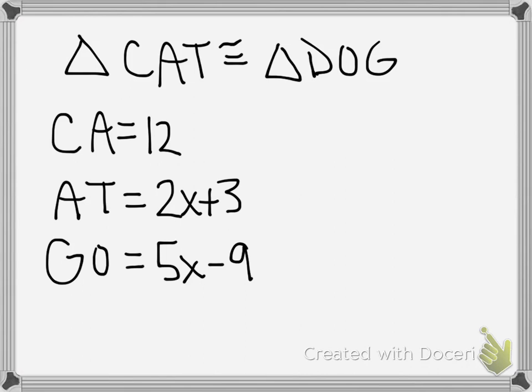Looking at the second problem that I give you here, it says triangle CAT is congruent to triangle DOG. So again, you're looking for a couple of things that are going to be congruent to each other. If I look at C and A, those are the first two letters of triangle CAT. A and T are the last two letters of that triangle, and G and O are the last two letters of triangle DOG. So the two things that are congruent to each other are AT and GO. AT right here is the last two letters. GO is the last two letters, so they correspond to each other.